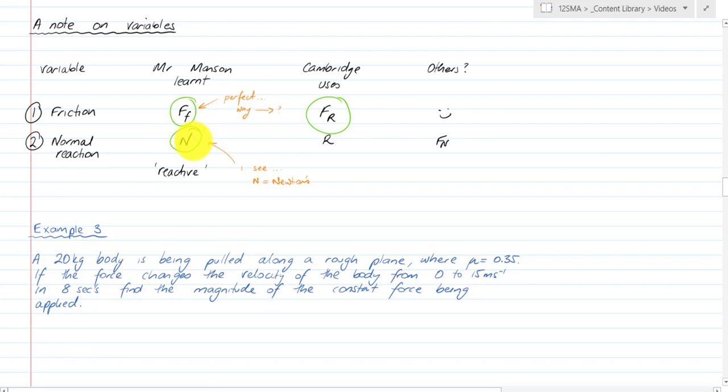I've also got the normal reaction force - sometimes I call that N. Why would you call it N when you've also got newtons called N? That's a bit of a problem and I don't know where I got that from, but I'll try and avoid it. Of course R is the other one, that's what Cambridge uses which is why we have FR. I'm going to try and stick to these, but we'll see how we go.